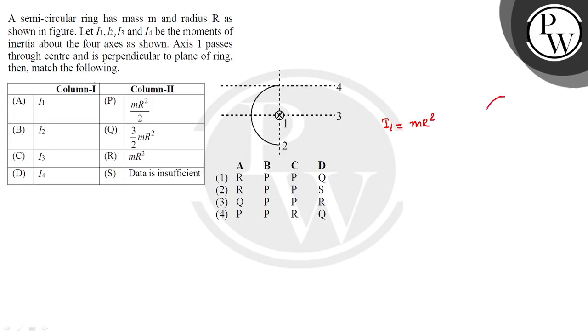We have a complete ring. If we consider this full ring, it is symmetrical about this axis. The full ring has mass 2M, so the moment of inertia of the complete ring will be 2M × R².